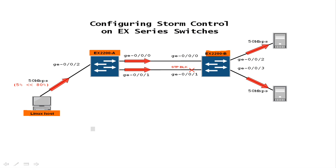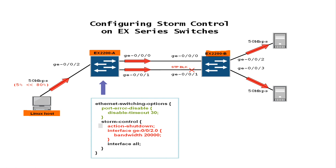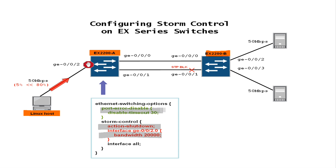Back to the drawing board. To stop the unknown unicast traffic storm, we will configure switch A to disable the offending port if the storm bandwidth exceeds 20 Mbps. We can manually clear the port disable state, or optionally configure the switch to restore service after a disable timeout expires.